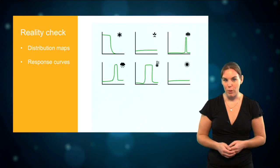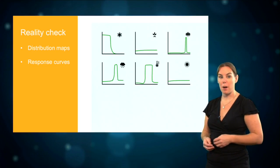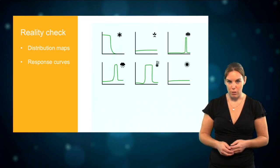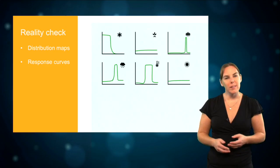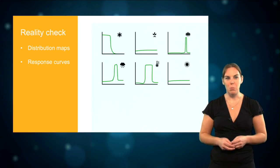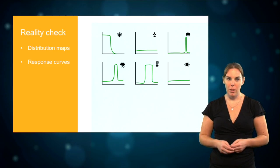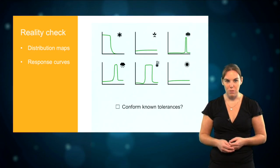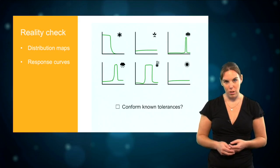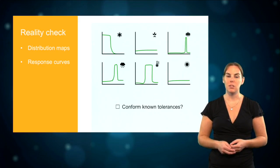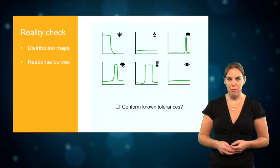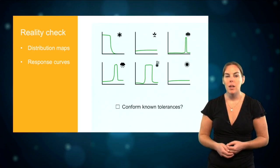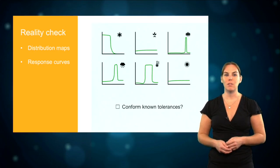Next, you can have a look at the response curves for each environmental variable. These show the probability of recurrence for each value of the environmental variable, while taking into account the other variables that you put into the model. With the knowledge that you have about your species, you can check whether these response curves are conform to known tolerances to the environmental conditions. For example, if your species is known to not survive above a certain temperature, you expect this to be reflected in the response curve.